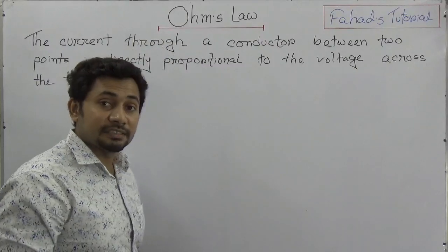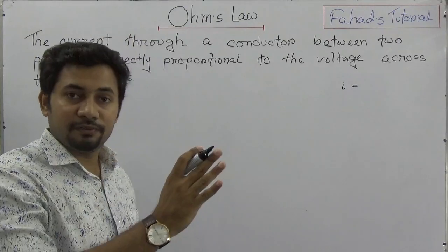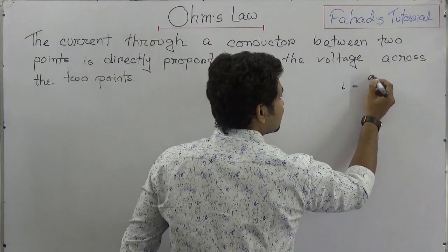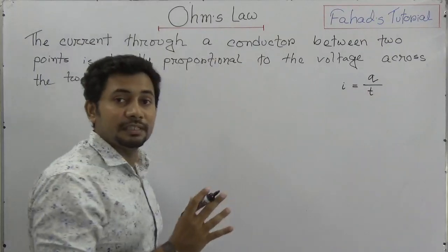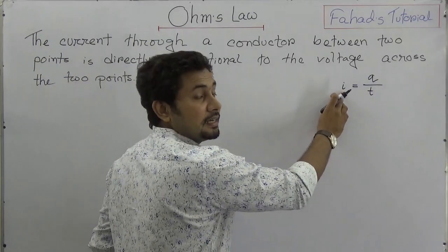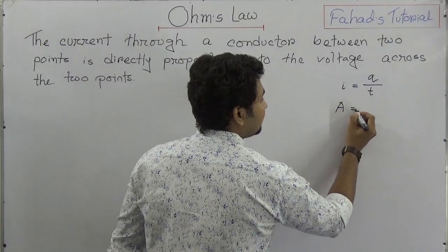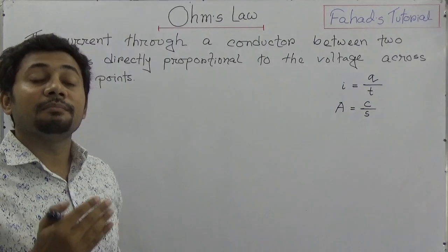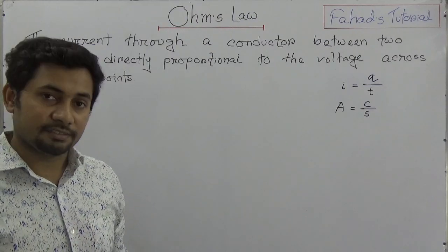Let's talk about electricity first. You know that electricity is nothing but the flow of electrons. So the movement of electric charge means the movement of charge. The amount of charge moving through a wire per unit time is called electricity, expressed by I, and the unit of current is ampere. Ampere is equal to coulomb per second.